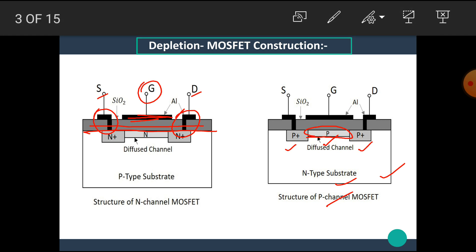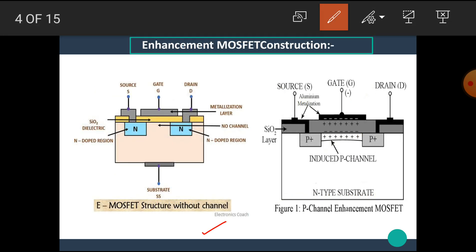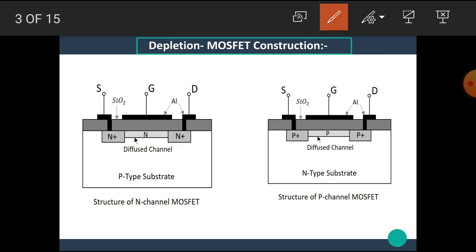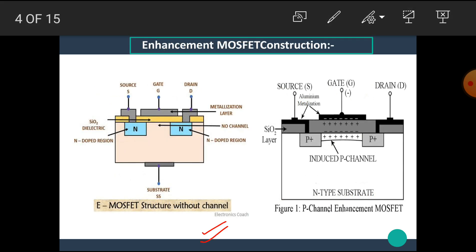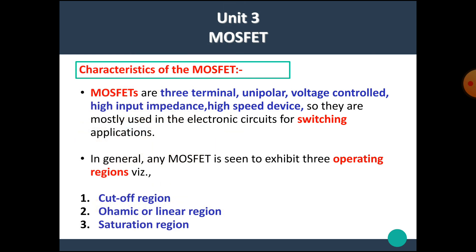This is the construction of the depletion MOSFET. Similarly, we can see the construction of the enhancement MOSFET. The only difference between depletion MOSFET and enhancement MOSFET is that in the depletion MOSFET, the channel is physically present. But in the E-MOSFET, the channel is physically not present. This is the main difference between D-MOSFET and E-MOSFET. The other construction details are the same, except for the channel.